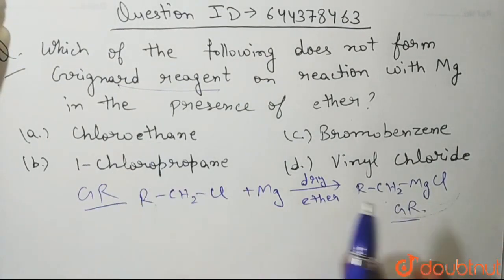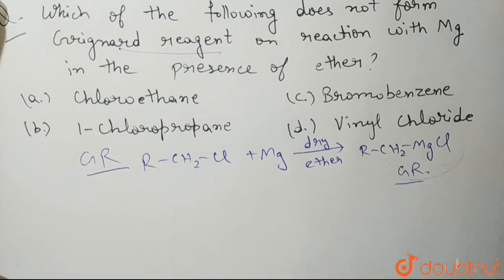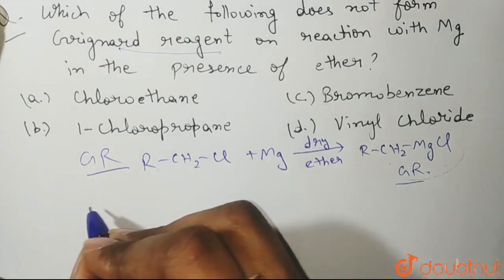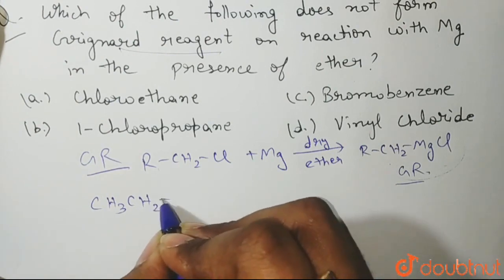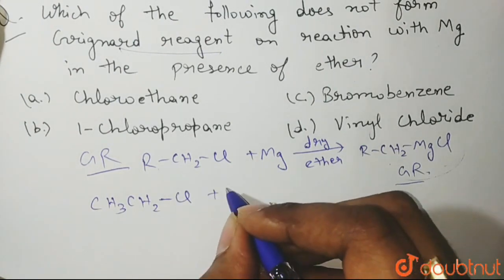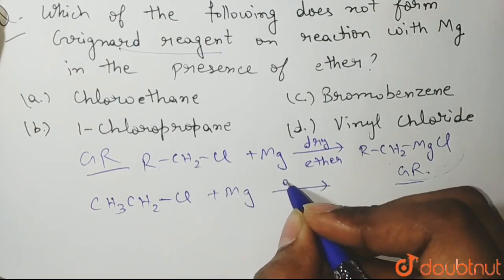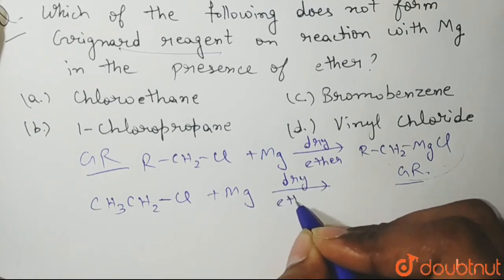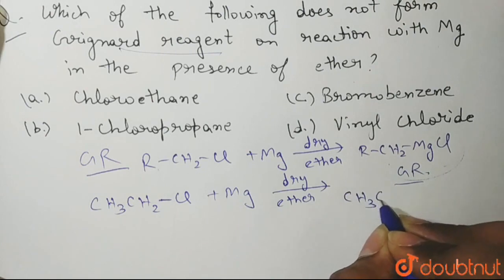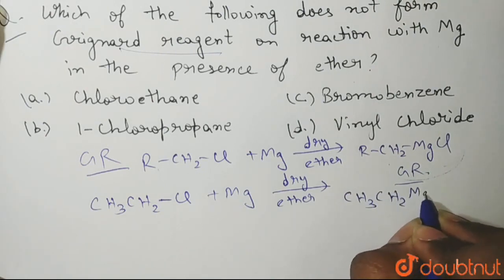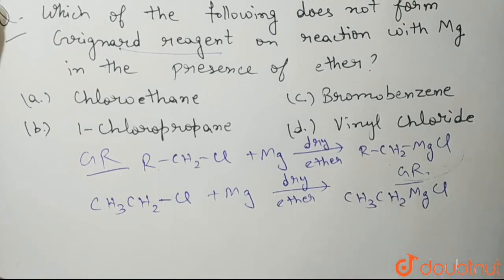Chloroethane of course is a haloalkane. What is the structure of chloroethane? It is CH3CH2Cl. So when you treat it with magnesium in presence of dry ether, what will you get? You will get your Grignard reagent: CH3CH2MgCl. Grignard reagent will be formed.